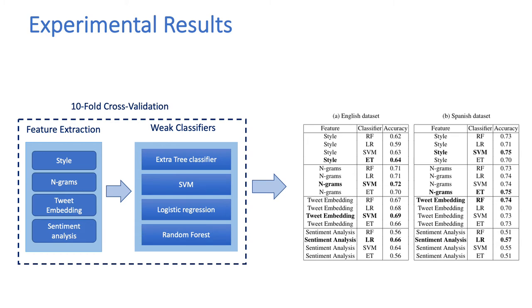Likewise, for Spanish, we chose SVM as the best classifier for the style feature, Extra Trees for n-grams, random forest for tweet embedding, and logistic regression for sentiment analysis. From the table, we can also see that for English tweet users, the best performing feature is n-gram with accuracy of 72%, followed by BERT tweet embedding, sentiment, and style-based features. Similarly, for Spanish tweet users, style-based feature and n-gram are equally the best set of features with an accuracy of 75%, followed by BERT tweet embedding and sentiment analysis. Overall, the different performance of features across English and Spanish may highlight different cultural behavior in the use of Twitter and news sharing behavior.